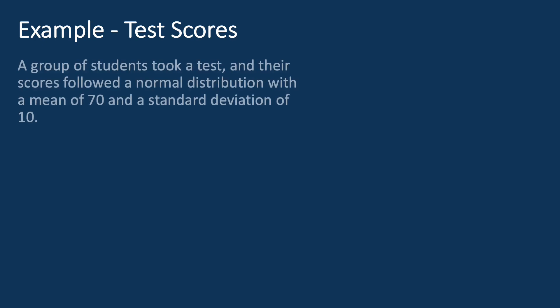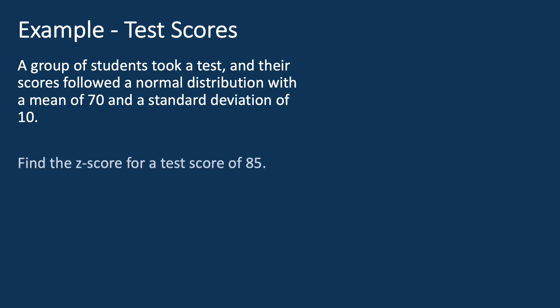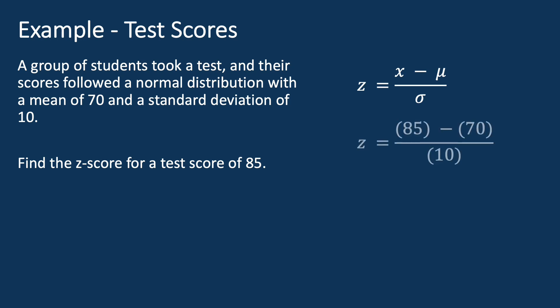For the example we just discussed, where students' scores follow a normal distribution with a mean of 70 and a standard deviation of 10, let's calculate the Z-score for a test score of 85. Z equals X minus mu over sigma. Here X equals 85, mu equals 70, and sigma equals 10. Substituting these values, we find that Z equals 1.5. So a test score of 85 is 1.5 standard deviations above the mean.